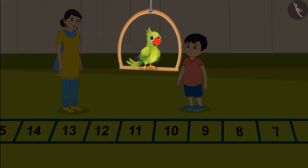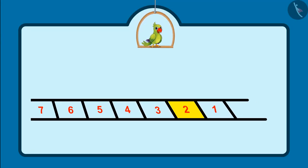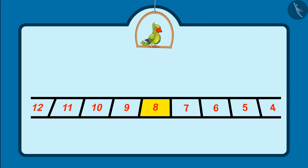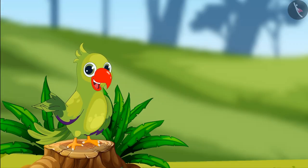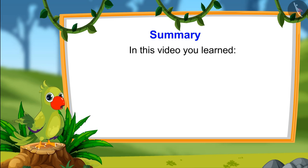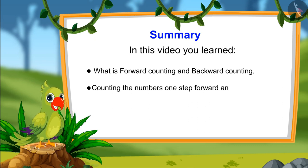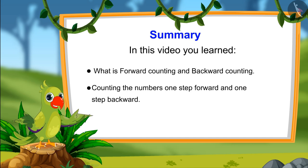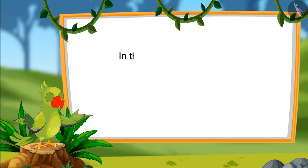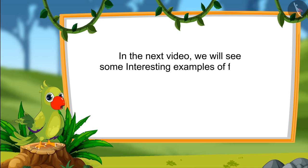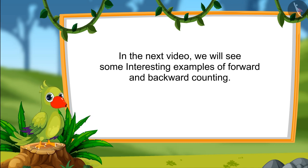Hey hi again kids! Here you saw how we can count forward and backward from a number. A number backward from 2 is 1 and forward from 2 is 3. A number backward from 8 is 7 and a number forward from 8 is 9. In this video you have learnt what is moving forward or forward counting, and going backwards or backward counting, and how to count one step forward and one step backwards. In the next video we will see some interesting examples. Bye-bye kids!